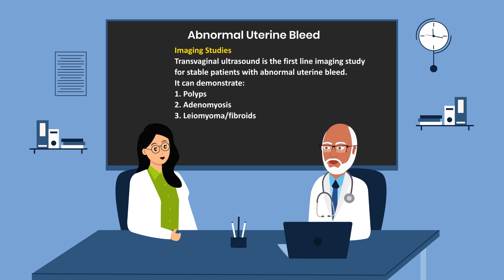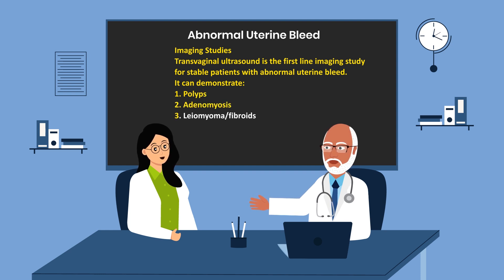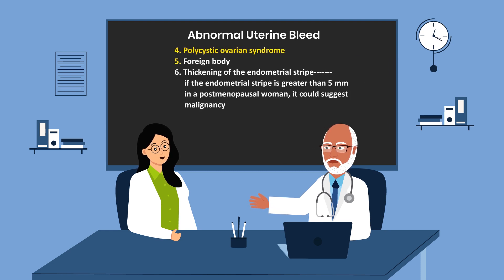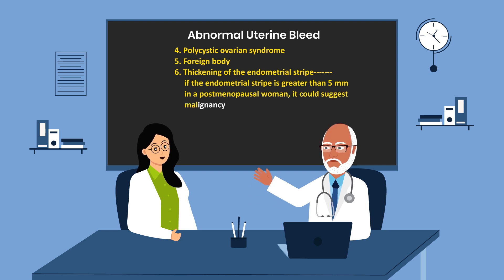Transvaginal ultrasound is the first-line imaging study for stable patients with abnormal uterine bleeding. It can demonstrate polyps, adenomyosis, leiomyoma (fibroids), polycystic ovarian syndrome, foreign bodies, and thickening of the endometrial stripe. If the endometrial stripe is greater than five millimeters in a postmenopausal woman, it could suggest malignancy.